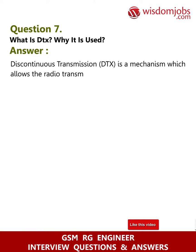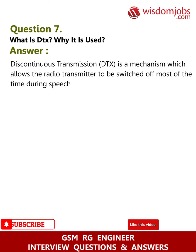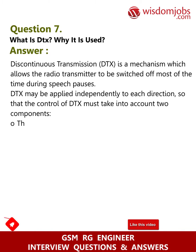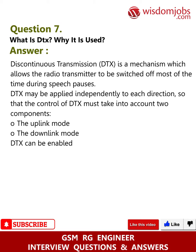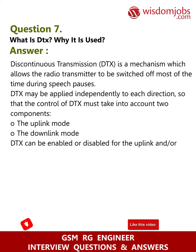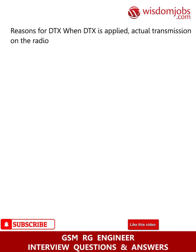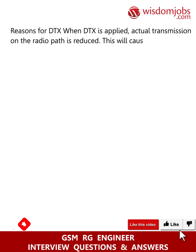Question 7: What is DTX? Why is it used? Discontinuous Transmission (DTX) is a mechanism that allows the radio transmitter to be switched off most of the time during speech pauses. DTX may be applied independently to each direction, so the control of DTX must account for two components: the uplink mode and the downlink mode. DTX can be enabled or disabled for uplink or downlink mode on a per-cell basis.